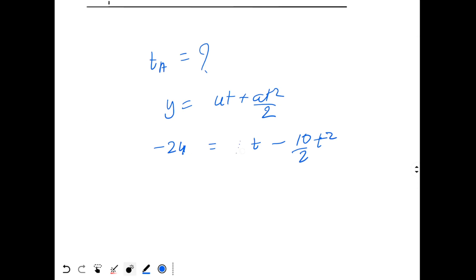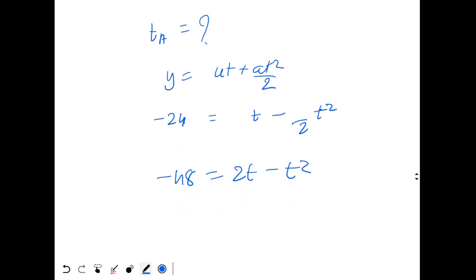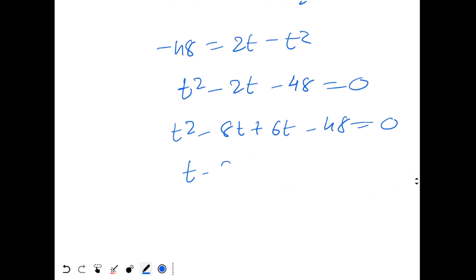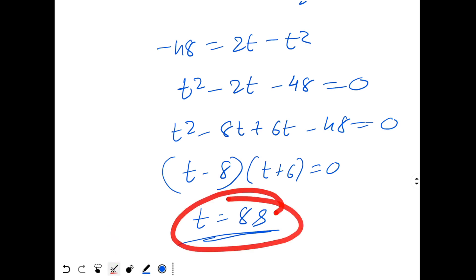Let's cancel out 0 from the equation. We divide the equation by 10 and multiply by 2. So minus 48 equal to 2T minus T square. So T square minus 2T minus 48 equal to 0. We get T square minus 8T plus 6T minus 48 equal to 0. So T minus 8 times T plus 6 equal to 0. I will get T equal to 8 seconds. I will not take the other solution because it is negative. So the stone A takes 8 seconds to reach the ground.